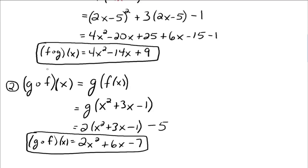Now make note, f composed with g and g composed with f, they're not the same functions. Everybody agree? 4x² - 14x + 9, not the same thing as 2x² + 6x - 7. So order matters. Which is the first function, and which is the second function matters when you're doing composition. The composition operation is not commutative.